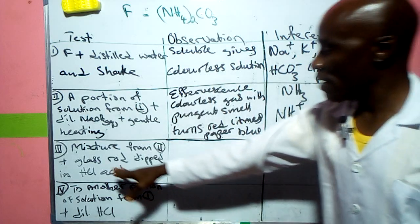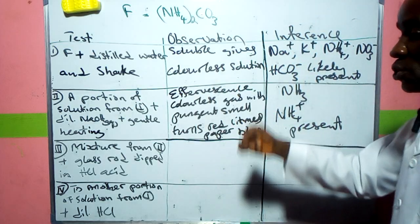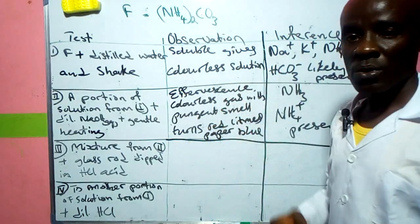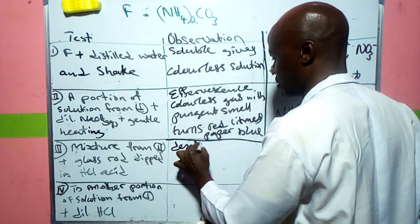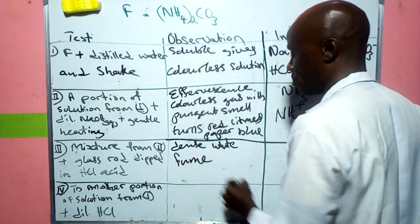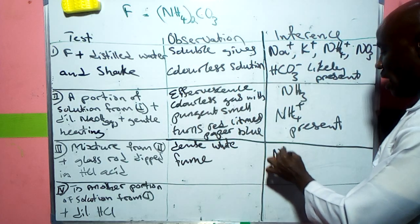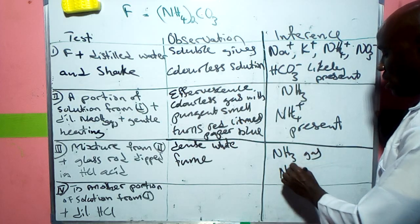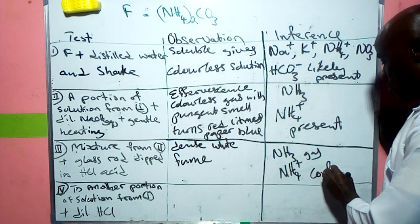The next one: emission from above, then plus glass rod dipped into hydrochloric acid. When you put it at the rim of the test tube that you're using, you notice dense white fumes. This confirms the presence of ammonia gas, and that means ammonium ion confirmed.